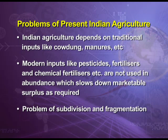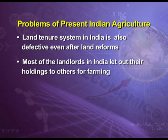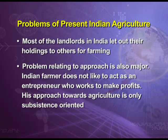A major problem is subdivision and fragmentation — small and scattered land holdings result in wastage of time, money and effort. The land tenure system in India is also defective even after land reforms. Most landlords let out their holdings to others for farming, depending on rental income but not sharing cultivation costs. Therefore, actual tillers of the soil are not left with any surplus. Many farmers also have a subsistence-oriented approach, cultivating only for self-consumption rather than for the market.